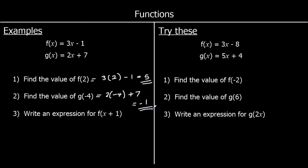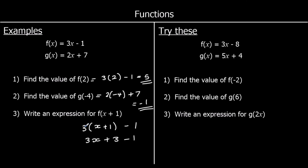Question 3: write an expression for f(x + 1). So we're putting x plus 1 into the f function — we're going to change x into x plus 1. So that's 3 times (x + 1) minus 1. All we've done is changed x into x plus 1. For the first question we changed x to 2, for the second we changed x to negative 4, and this time we're changing x to x plus 1. We can simplify by expanding the brackets: 3 times x is 3x, 3 times 1 is 3, so we've got 3x plus 3 minus 1, which is 3x plus 2.